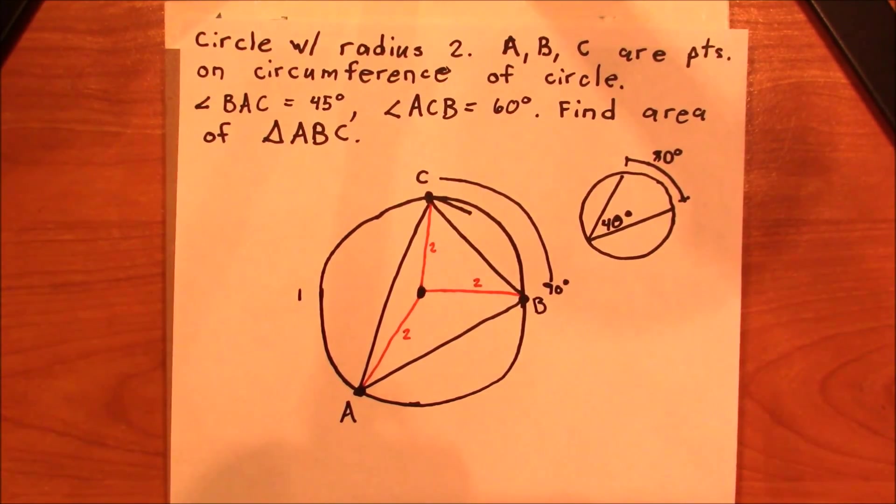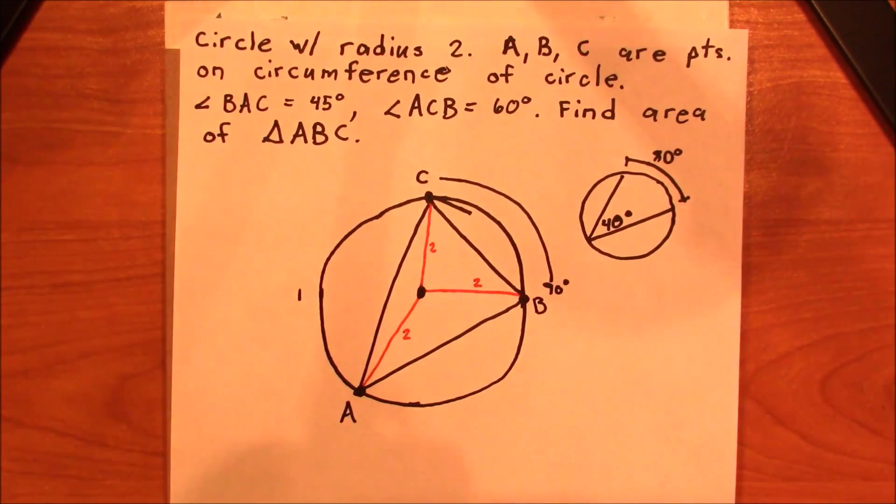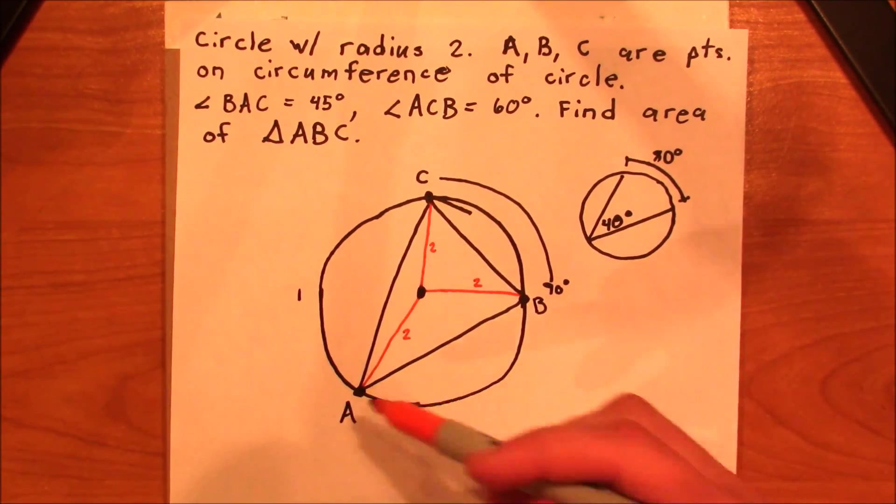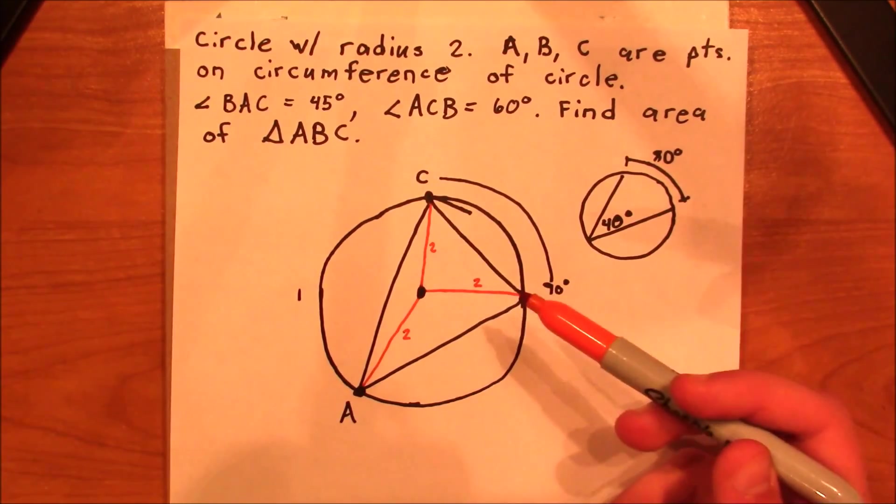All right, so now what we need to do is we need to figure out the area of this whole triangle. The easiest way to do this is to figure out the length of two sides and one of the angles within. We already know all three angle measurements, but we don't know any of the side lengths. So how do we figure that out?